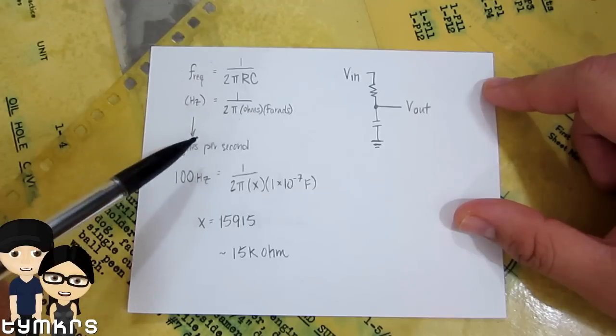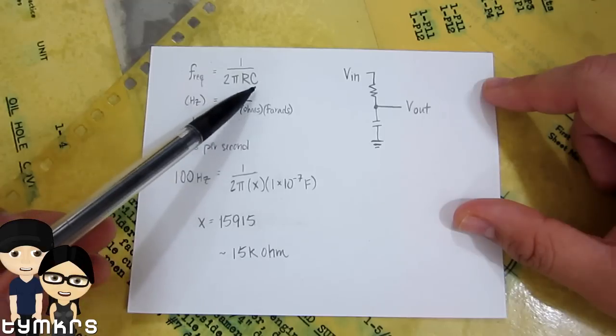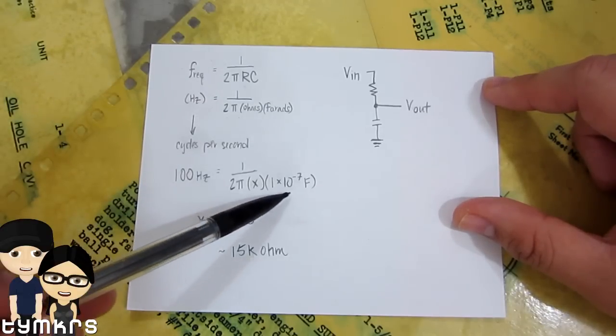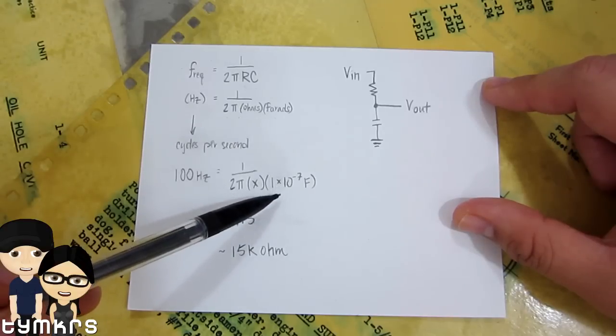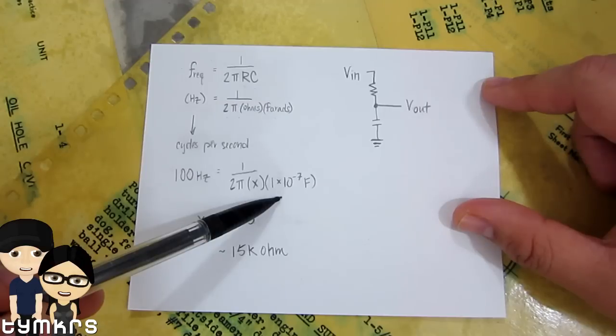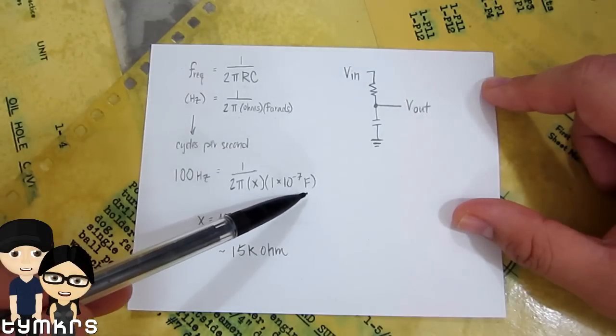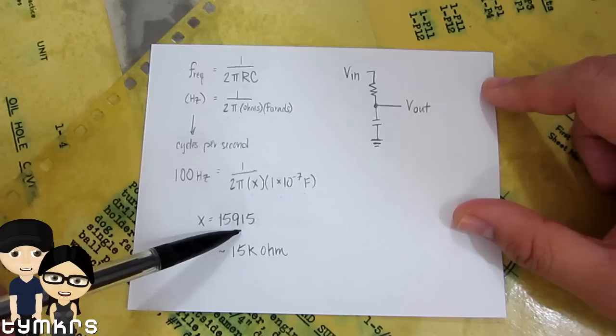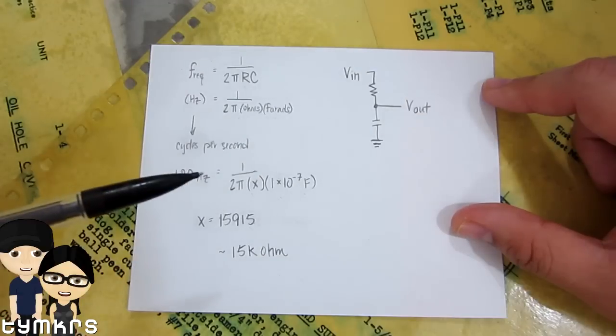So I went conservative. R would be for the resistor value, done in ohms, and C for the capacitor value, done in farads. For 100 hertz, you have two unknowns—the resistor and the capacitor—so you kind of have to choose one. I just so happen to have a 104 capacitor, which is 1 times 10 to the negative 7 farad. Then I solved for x, and x happened to be around 15,915 ohms, so I just rounded down and said I have a 15 kilo ohm resistor, so I'll use that.